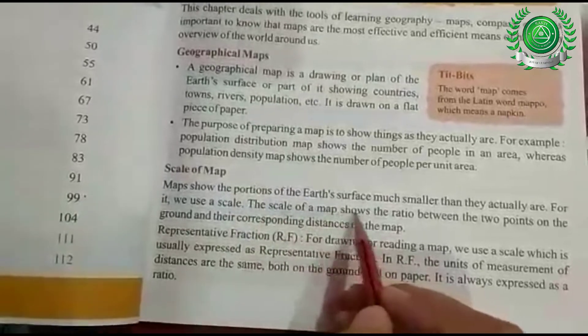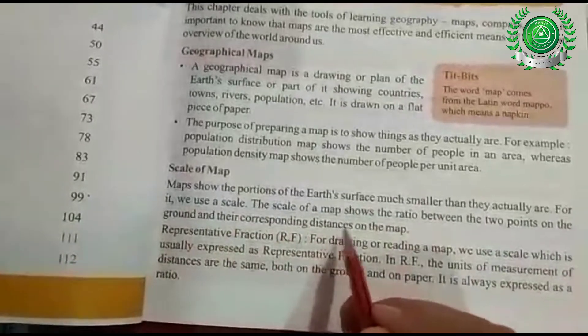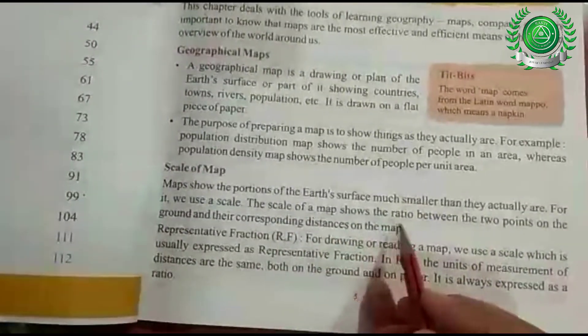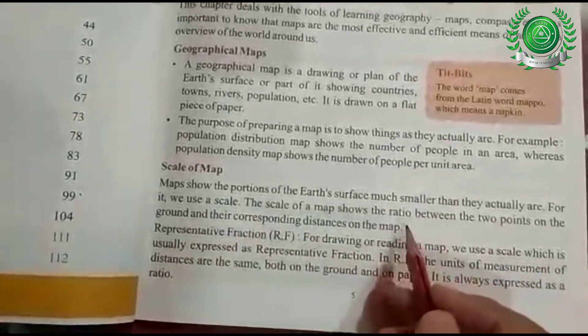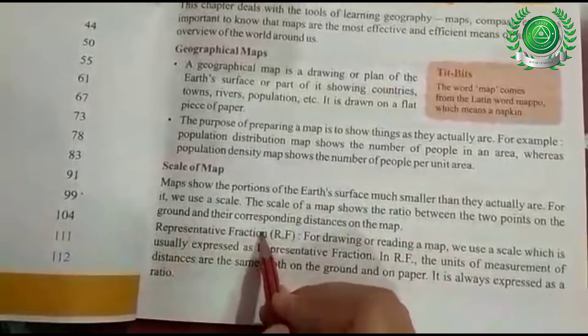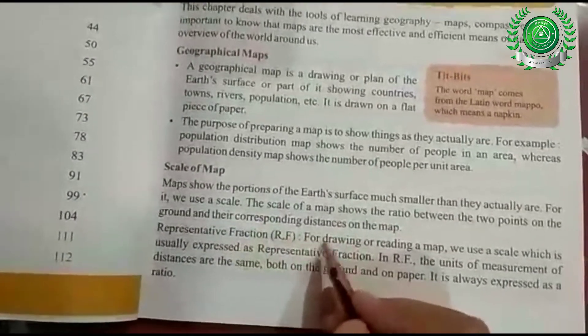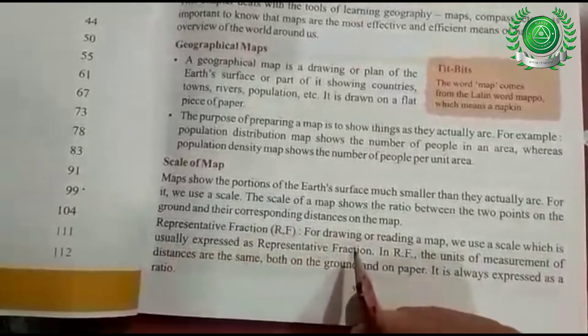The scale of a map shows the ratio between two points on the ground and their corresponding distance on the map. For drawing and reading a map, we use a scale which is usually expressed as a representative fraction (RF).